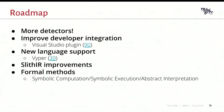Looking at the roadmap for the coming weeks and months: first, we're going to continue working on our detectors — opening more of them to the public and covering more types of vulnerabilities. We'll continue working on developer integration, for example with an ongoing Visual Studio plugin. We're also considering extending the framework to new languages, with Viper as one candidate. We'll continue improving the intermediate representation, and in particular we're interested in using it to perform more formal method analyses like symbolic execution or abstract interpretation — and we already have proofs of concept for these techniques.